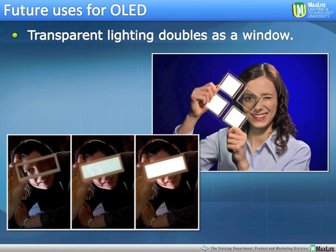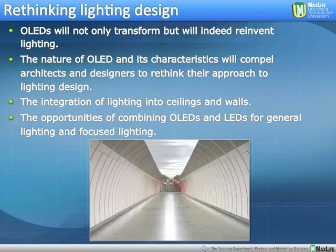These substrates can be made completely transparent, semi-transparent, or completely opaque. So we have flat, flexible, and transparent. To me, this is one of the most exciting things on the lighting industry horizon right now. OLEDs will not only transform, but will actually reinvent the way that we think of and use lighting. The integration of lighting into ceilings and walls, combined with building controls, will be the ultimate in energy efficiency — and quite beautiful if done well. The opportunities of combining OLED technology with regular LED technology for general lighting and focused lighting really opens things up to the unimaginable.